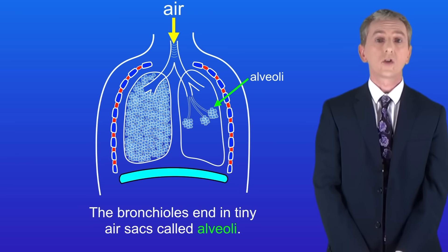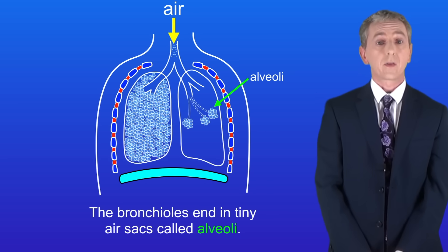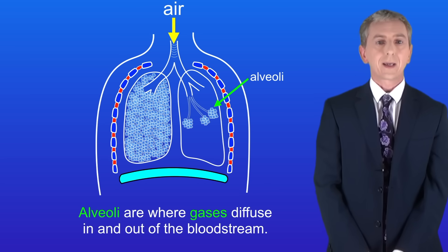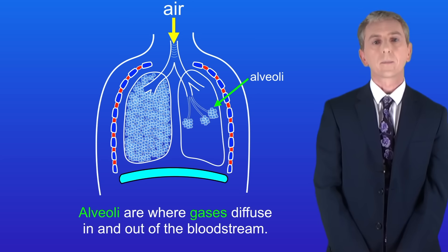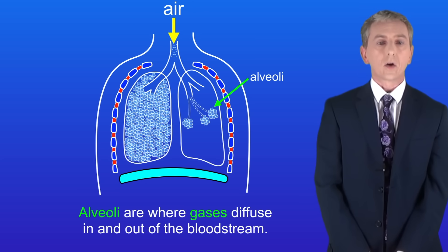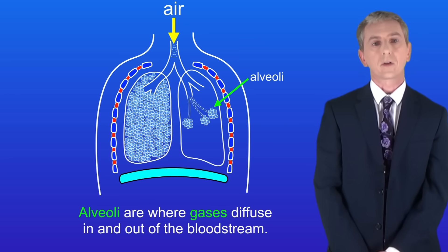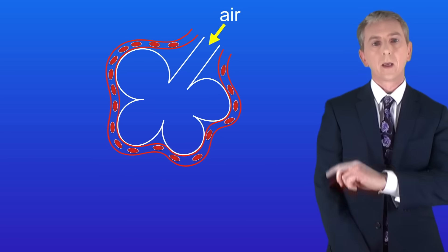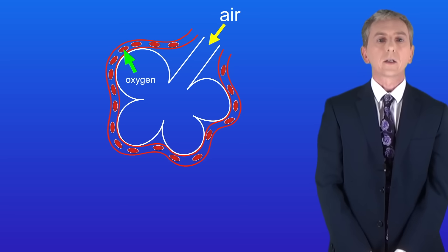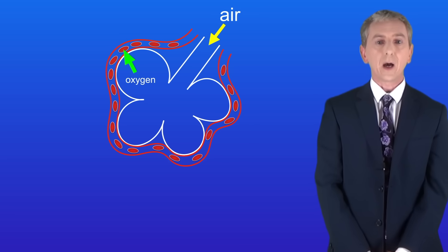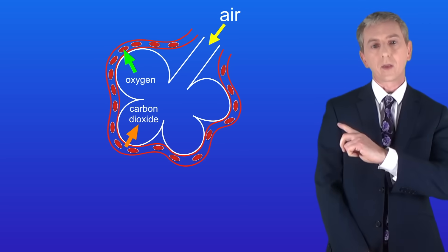The lungs contain a huge number of alveoli and each one is microscopic — in this diagram they are shown bigger than they actually are. The alveoli are where gases diffuse in and out of the bloodstream; in other words, they are the sites of gas exchange. Here is a close-up of a single alveolus. Oxygen in the air diffuses into the bloodstream, and carbon dioxide diffuses out of the bloodstream back into the air.